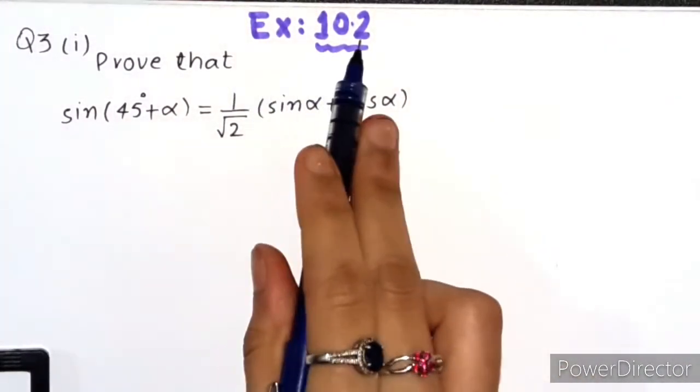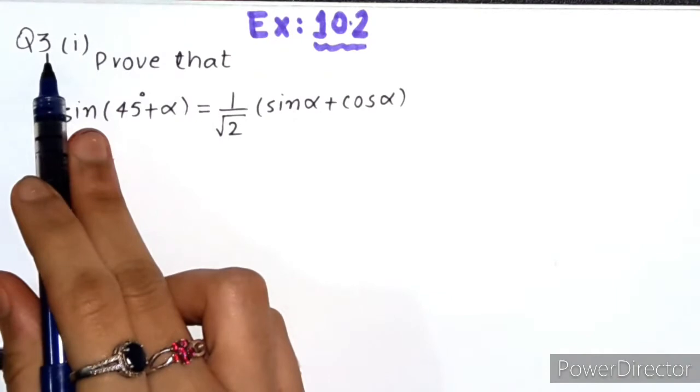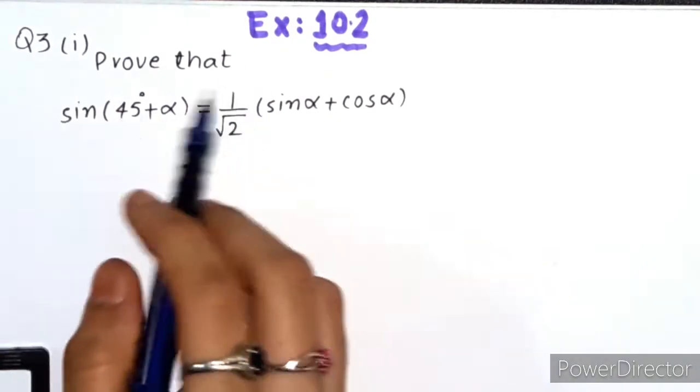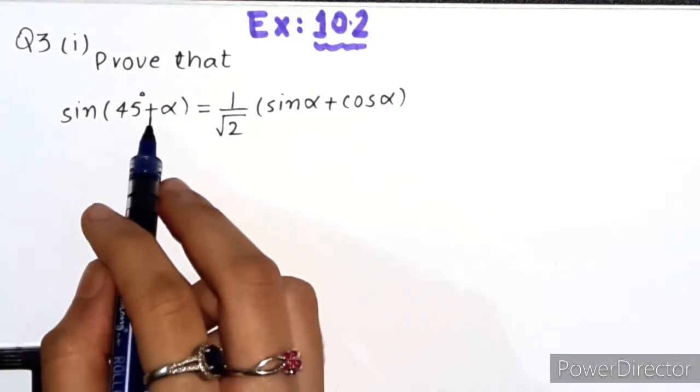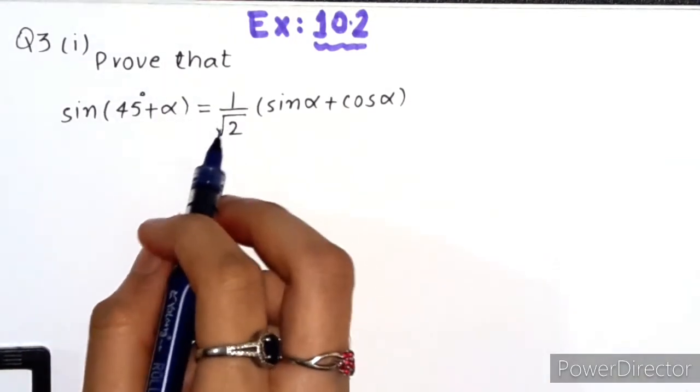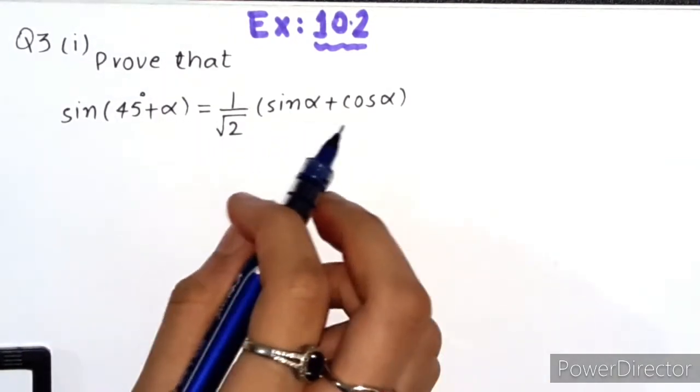Exercise 10.2, first we have question 3, part 1, which is in the reduced syllabus. We need to prove that sin(45° + α) equals 1 over root 2 times (sin α + cos α).